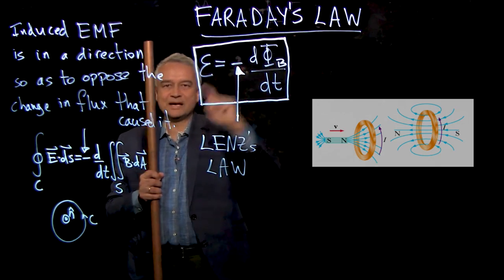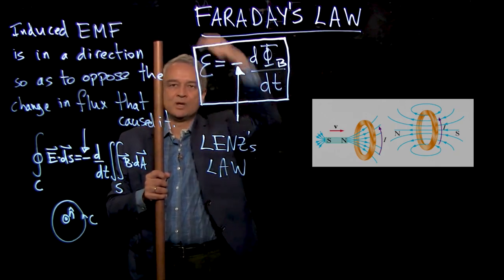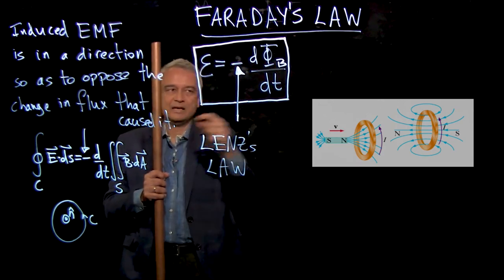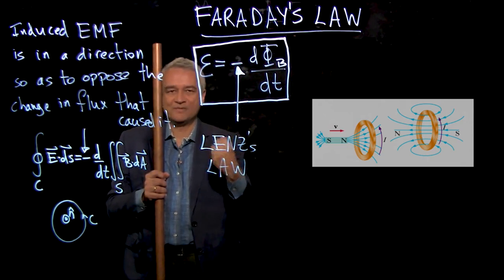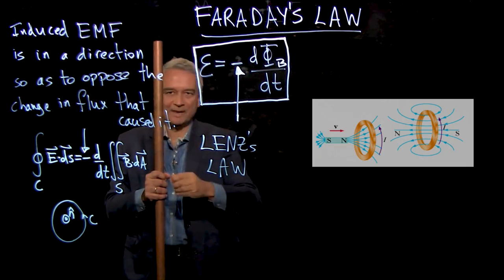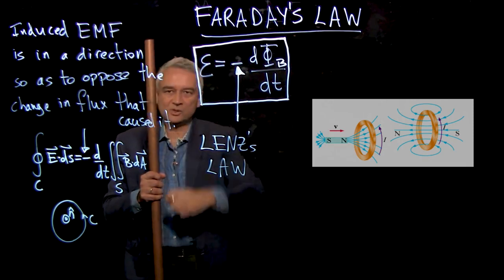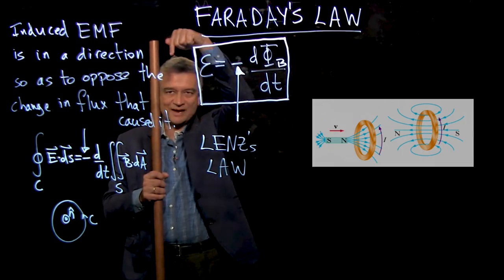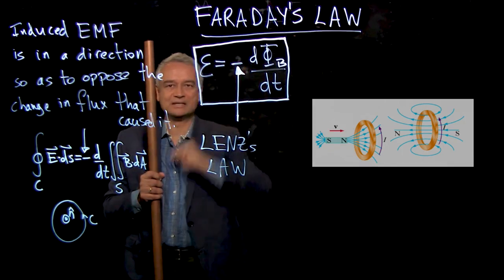So this minus sign is responsible for what we saw when we did this demo. If this had been a plus sign, when I dropped the magnet in the pipe it would have accelerated faster than gravity because the current would have been in the opposite direction — it would have been trying to suck the magnet downwards, and the magnet would have been pulled down by both gravity and magnetic forces and fallen faster. The fact that the magnet falls more slowly means there's a force opposing its motion, and that comes from this minus sign — Lenz's law.